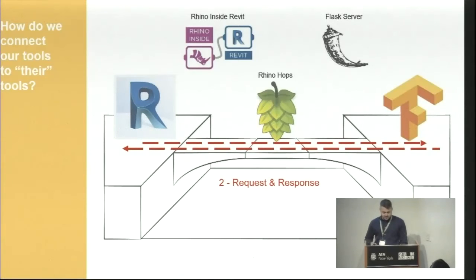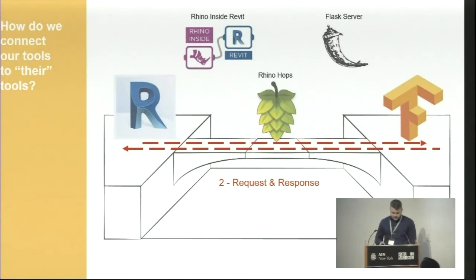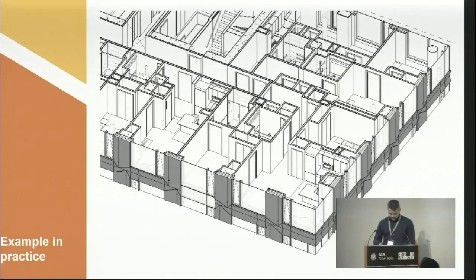The final piece of the puzzle is Hops — a Grasshopper plugin which can make HTTP requests, including encoding geometry or other Rhino data types, and waiting for a response. It's really easy to use, and the folks at McNeel have released detailed documentation for each piece, including a step-by-step video walkthrough explaining how to set up Flask. Let's see an example in practice.